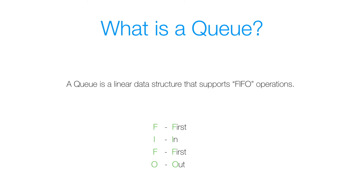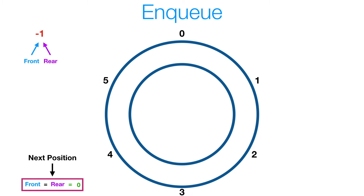Now let's look at the enqueue method. As we've seen with the linear queue, the problem that we faced was that we either used too much space, or we used too much time. And to combat this, we're going to use the idea of wrapping elements back around as if they were in a circle, thereby reducing our space consumption that we've seen with the linear queue.